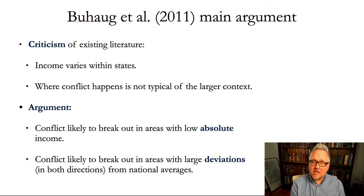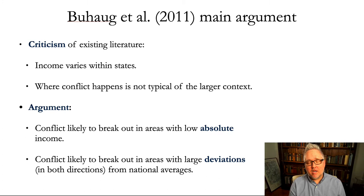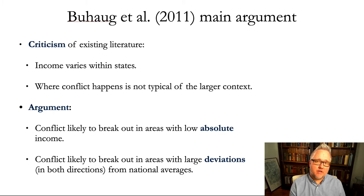Their insight is that income varies within states as well as the likelihood of conflict within it, due to the ways that income levels affect people's behavior and likelihood to use violence. Their argument is twofold, looking at two different aspects of the relationship between economic factors and conflict. First is an absolute relationship: that conflict is more likely to break out in areas with low absolute income. And the second is a relative marker in which, as national income within an area changes, that also will increase the likelihood of conflict to break out — both positively and negatively — in areas that are particularly well off compared to the national average and those that are less well off as they change.